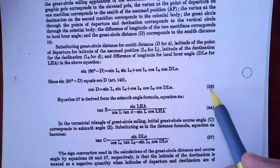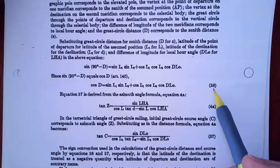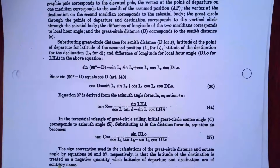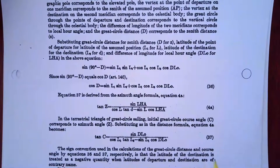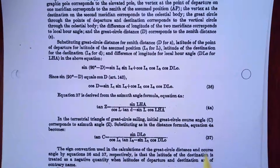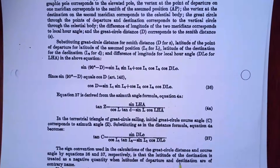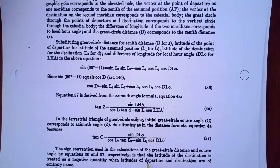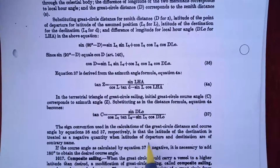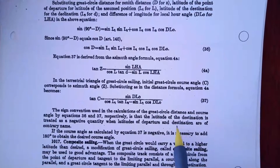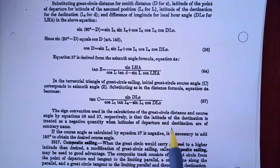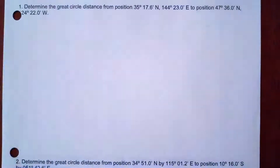You're going to go down to equation 36 — it's this cosine D formula. Here's the rule we're going to use for equation 36: if you cross the equator, you're going to have to treat L2 as a negative quantity.